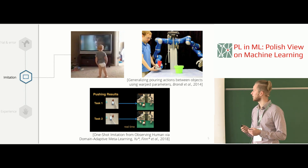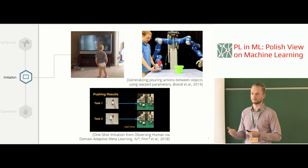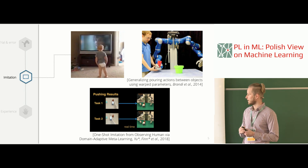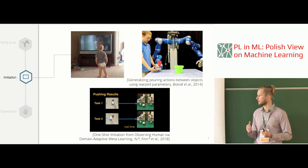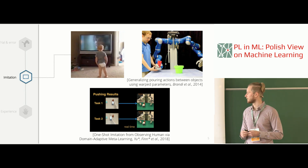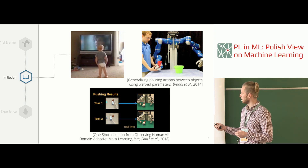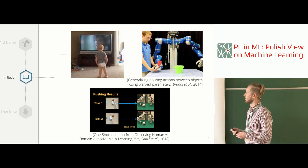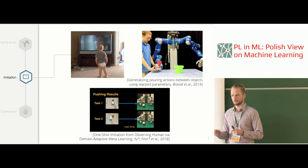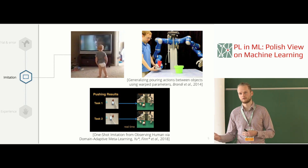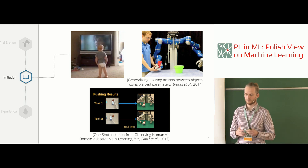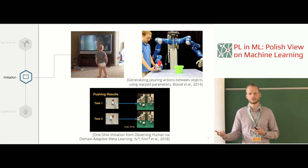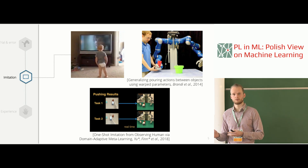Over the past three to four years, amazing progress has been made, especially in how we provide demonstrations. One example is work from Chelsea Finn at Google Brain, showing how we can learn from just one demonstration — assuming pre-training with meta-learning. At test time, you provide one video demonstration of a human performing a task, such as pushing one object toward another, and the robot can replicate the task even in a slightly different setup.